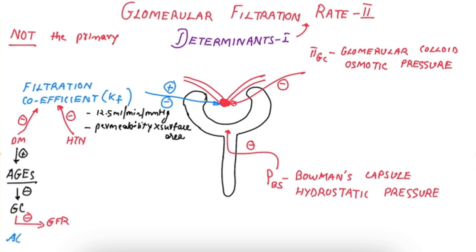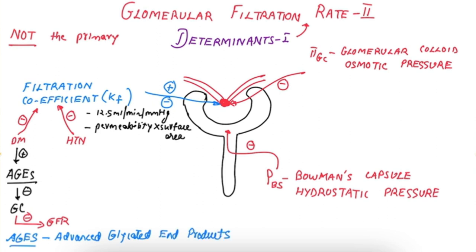AGEs are advanced glycated end products — a form of products which are formed when diabetes mellitus is not optimally controlled for a long time.